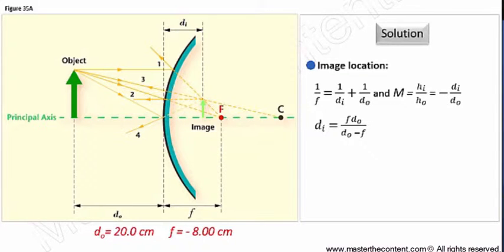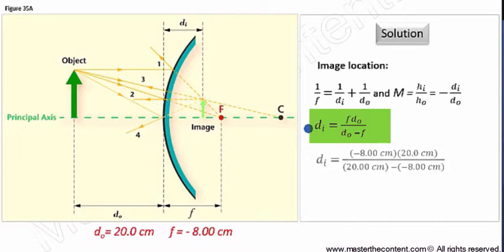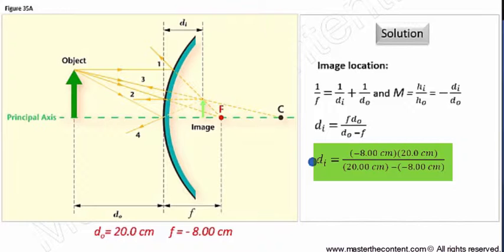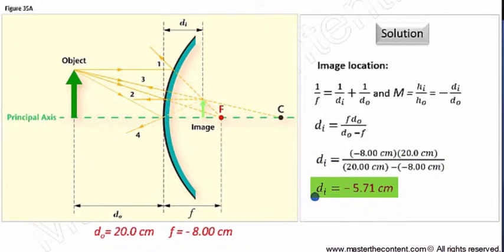Coming over here, as we demonstrated earlier, from the mirror equation and magnification equation, we can solve for the image distance. Which leads us to the following equation here. If we go ahead and fill in our values, we find that the image distance is going to be negative 5.71 cm.